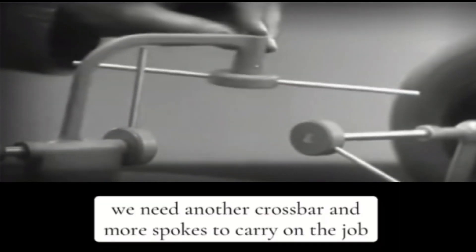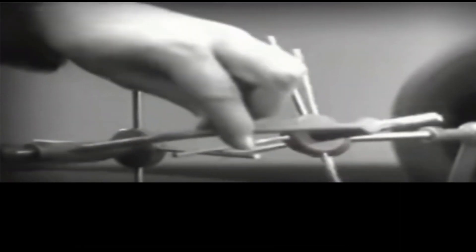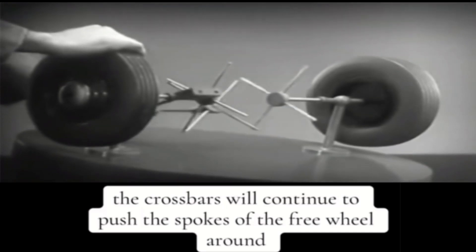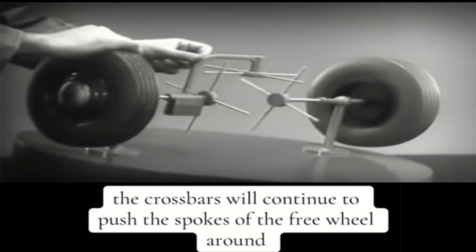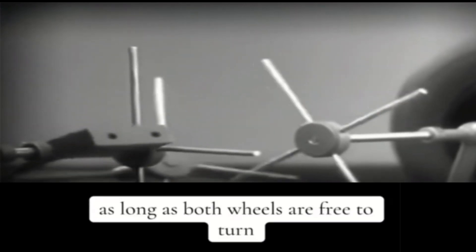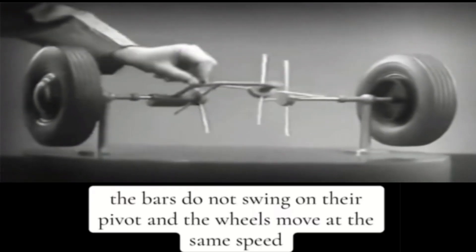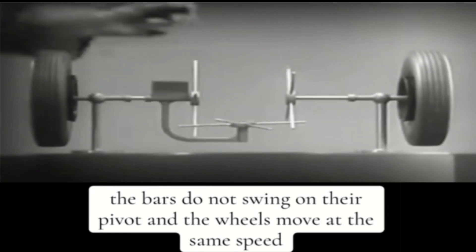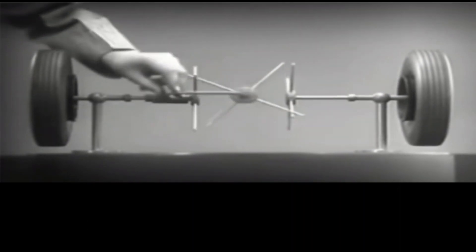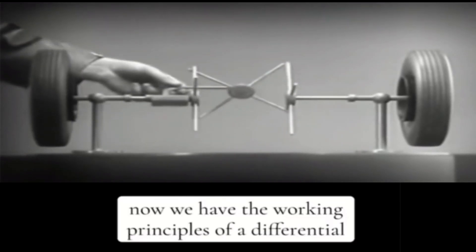We need another crossbar and more spokes to carry on the job. When we stop one wheel, the crossbars will continue to push the spokes of the free wheel around. As long as both wheels are free to turn, the bars do not swing on their pivot, and the wheels move at the same speed. Now we have the working principles of a differential.